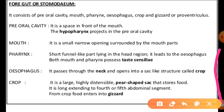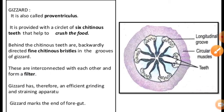Food is then transferred from the crop to the conical muscular part called the gizzard or proventriculus, which has an outer layer of thick circular muscles. The gizzard has six large chitinous teeth which help in crushing the food into fine particles, acting as a straining apparatus.